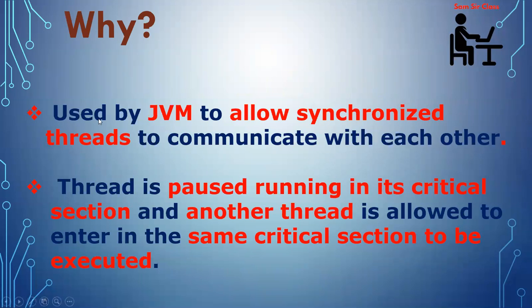Interthread communication is required by the JVM to allow synchronized threads to communicate with each other. A thread first running in its critical section allows another thread to enter the same critical section to be executed. We will see this through one example.